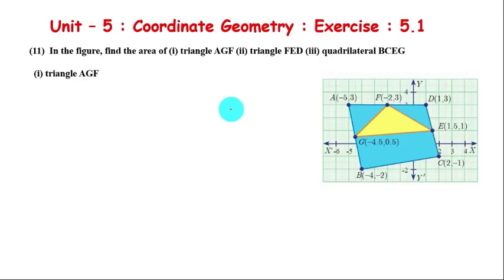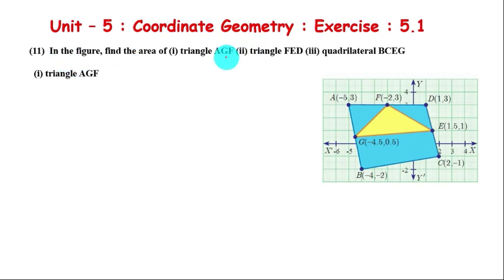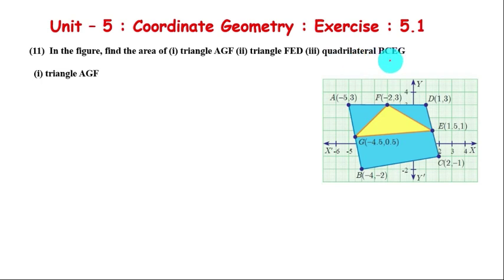Assalamualaikum students. Unit 5, Exercise 5.1, Question number 11. In the figure, find the area of: Subdivision 1 — Triangle AGF; Subdivision 2 — Triangle FED; Subdivision 3 — Quadrilateral BCEG.